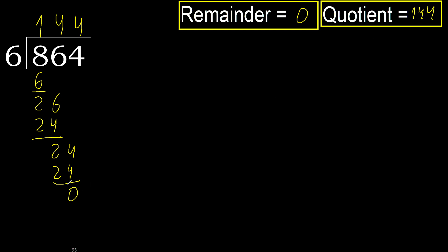Okay, remainder 0. Therefore, 864 divided by 6 is 144.